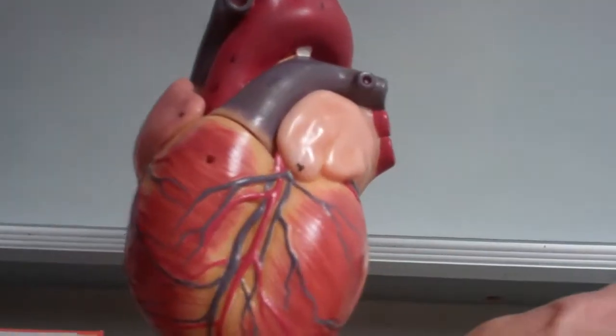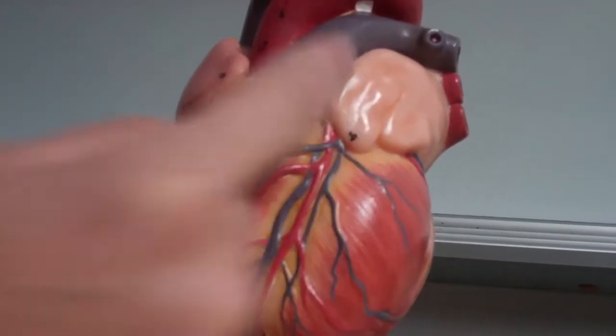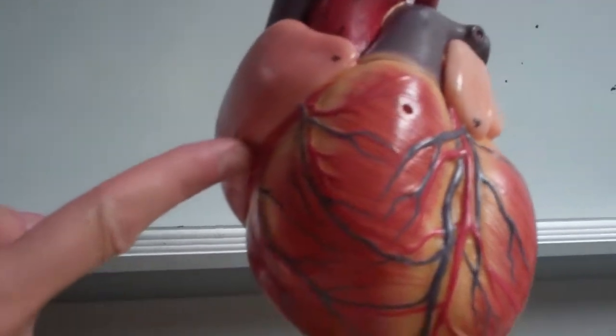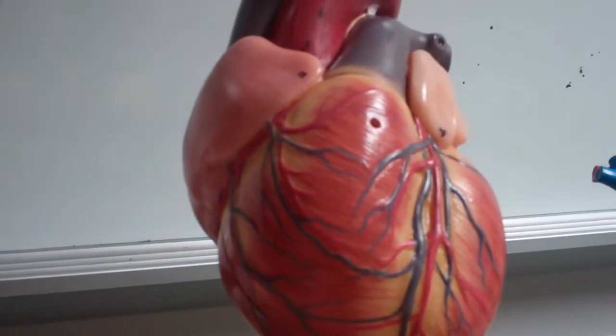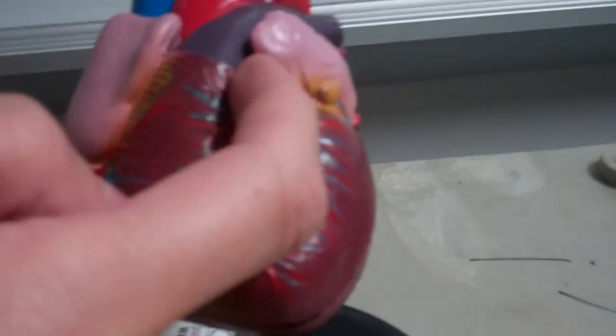Coming off the aorta, we're going to have the left coronary and the right coronary. The right coronary is over here in this region, and then the left one is coming, it's technically right behind this pulmonary trunk.